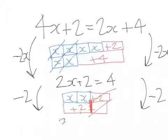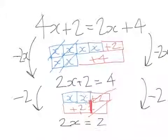So what does that leave me with? That leaves me with 2x on the top equal to 2. And that makes sense. 2x plus 2 take away 2 is 2x on the left, and 4 take away 2 is 2 on the right.